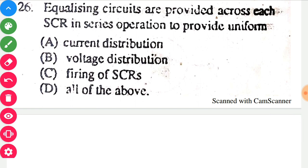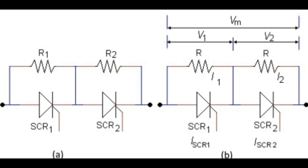Equalizing circuits are provided across each SCR in series operation to provide — the correct option is B: voltage distribution. When connecting SCRs that may have the same rating but different I-V characteristics, we want to ensure the voltage drop across each SCR is the same. We connect a resistance across each SCR in parallel — that is the equalizing circuit — and thus voltage distribution across each SCR becomes equal.